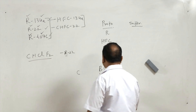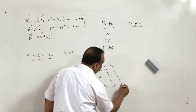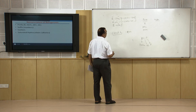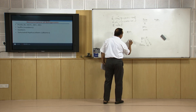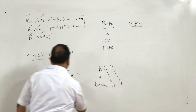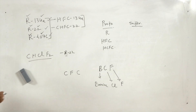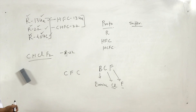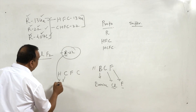So if the composition has chlorine and fluorine, chlorine will appear first, then fluorine, then carbon, and if it also has hydrogen, H will precede all of them. So R22 can also be written with R replaced by SCFC.